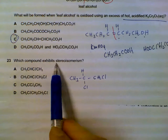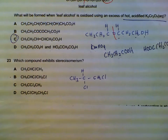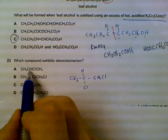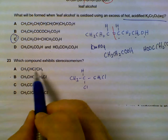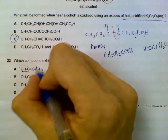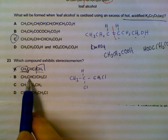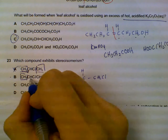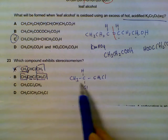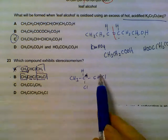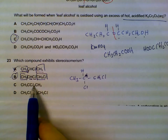Question 23: which compound exhibits stereoisomerism? We are checking for chiral carbons — look for carbons joined to four different groups. Drawing out the structures: option A has a carbon joined to two CH₃ groups, so it cannot be chiral. For option B, this carbon has four different groups: one hydrogen, one chlorine, and two other distinct groups. This is your chiral carbon with four different groups, so B is the answer.